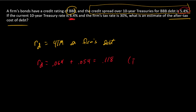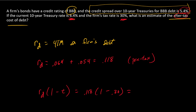That's our pre-tax cost of debt estimate, but we're after the after-tax cost. Recall in the weighted average cost of capital formula, we multiply RD by 1 minus the tax rate. So that's 0.118 times 1 minus 30%, giving us 0.0826, or 8.26%. That's the after-tax cost of debt.